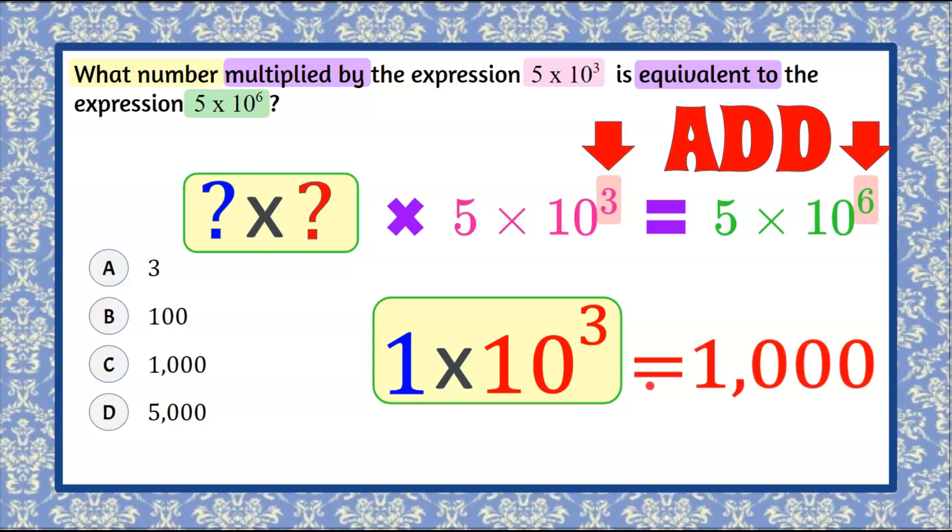And 10 cubed is equal to 1,000. So we're going to take our decimal and move it, and we get 1,000. So 10 times 10 is 100, 100 times 10 is 1,000. So you just keep moving the decimal point. And that is answer C.